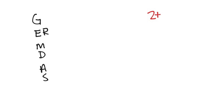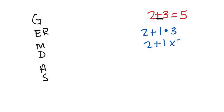Germ desks is very very important, and you follow germ desks when you have more than one operation. If you have 2 plus 3 that's real easy — you already know that the answer is 5. Notice in this problem you only have one operation, which is addition. But what happens if you have 2 plus 1 times 3? By the way, in 6th grade you're going to see me use the dot symbol for multiplication a lot, so get used to it.